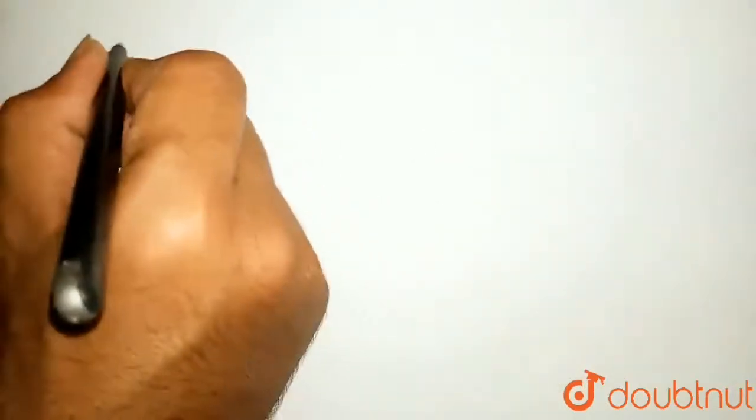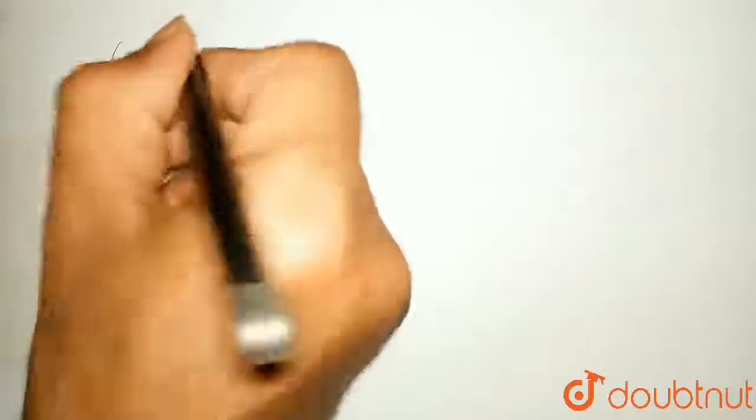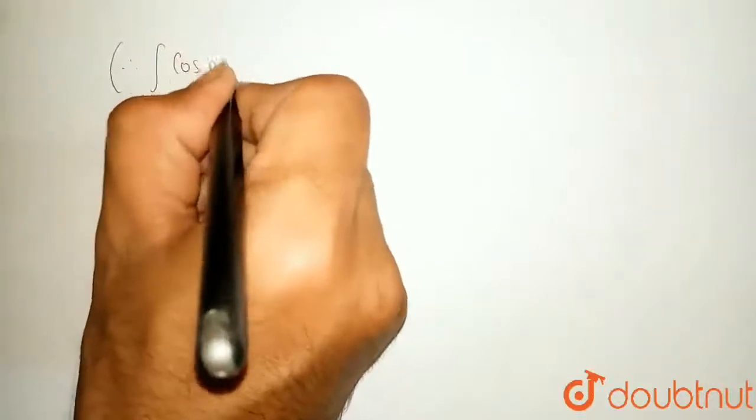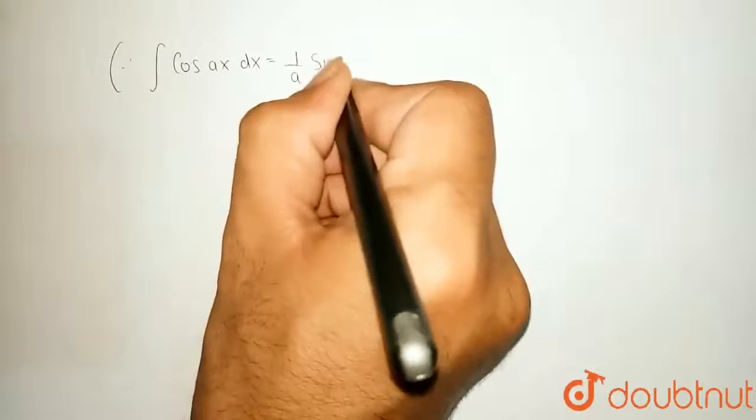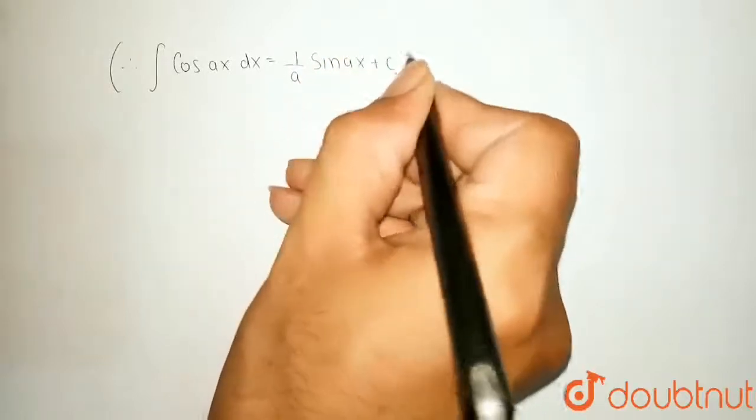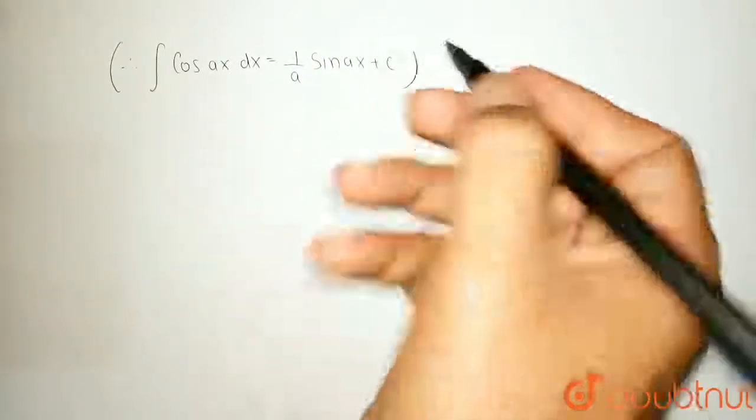And we know the formula of integration of cos ax dx is equal to 1 upon a sin ax plus c where plus c is our integration constant.